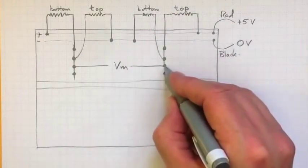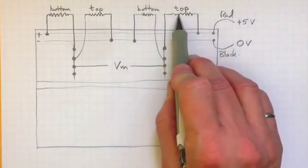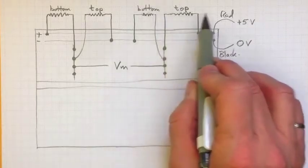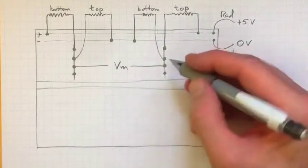this will be about 2.5 volts. Now if I bend the beam so that the top is put in tension, that resistance goes up and this resistance goes down, so this voltage over here goes down a little bit.